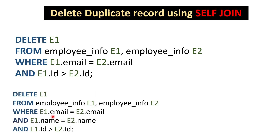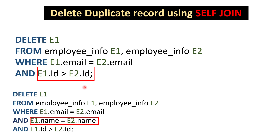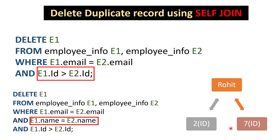The last condition in the WHERE clause is critical: e1.id > e2.id. This ensures we delete only one record from each duplicate pair, not both. It deletes the record with the comparatively greater ID. For example, Rohit has duplicate records with IDs 2 and 7 — this condition deletes the one with ID 7 since 7 is greater than 2. Both WHERE conditions must be true since we use the AND operator. In our case, Rohit with ID 7 and Sanket with ID 8 will get deleted.